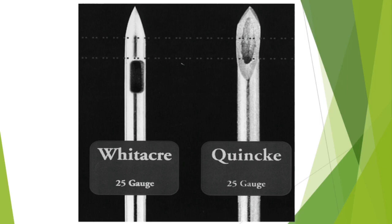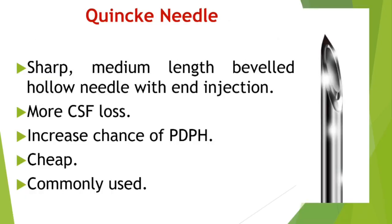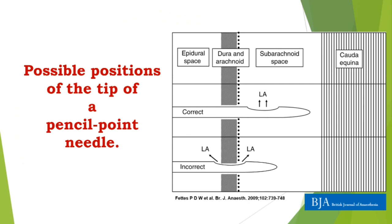One more point of interest with pencil point needles — that is, blunt tip needles — is that as the orifice is on the side of the shaft, part of the orifice may be inside the subarachnoid space while the proximal part of the orifice is within the epidural space. In such cases we will still see CSF coming out, but when we give local anesthetics, part of it will go inside the subarachnoid space yet some part of the drug will be inside the epidural space, producing a partial or even failed block.